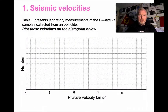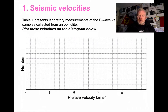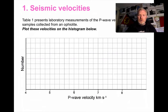What Chris McLeod is doing is trying to understand whether the seismic velocity difference is as a result of different structures or perhaps something else. To test this idea we're going to work on the data that he has generated. Let's start with looking at seismic velocities. In table one I've given you a set of values for seismic velocities measured in different rock types. What I'd like you to do is have a go at plotting these up as a histogram.